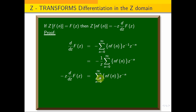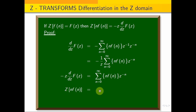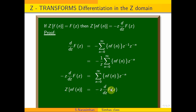This is the Z-transform of the sequence n·f(n). So the Z-transform of n·f(n) equals minus z·d/dz of F(z). This is an important property.